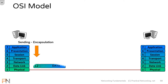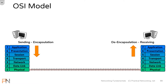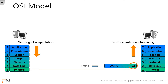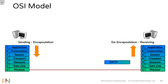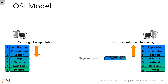That frame gets converted into ones and zeros and finally put on the wire. On the other side, the receiving host is going to do the opposite process — de-encapsulation. It's going to take those ones and zeros off the wire to convert them back into their frame. Layer 2 looks at the Layer 2 header to confirm it is addressed to this host's NIC — if it is, it discards that header and passes it up the stack. Then Layer 3 looks at the IP header to confirm it is addressed to this host's IP address — if it is, it discards the Layer 3 header and passes it up to the transport layer. Layer 4 then looks at the Layer 4 header to identify the port this data is destined to, and delivers the data to the appropriate application, which can finally process the data.